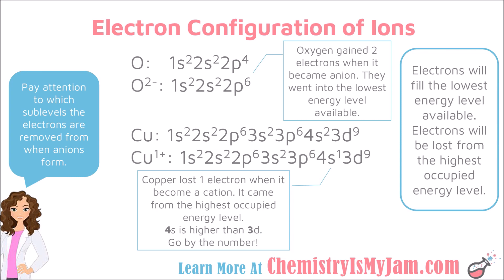It is also a good idea to understand how the electron configuration for ions looks. Take oxygen, for example. Oxygen, when it becomes an ion, has a negative 2 charge — it has taken two electrons from another atom. Oxygen's original electron configuration was 1s2, 2s2, 2p4. That p sublevel can hold up to 6, so the two electrons oxygen took go into the 2p sublevel, making the configuration end in 2p6. This follows the rule that electrons fill the lowest available energy level first.